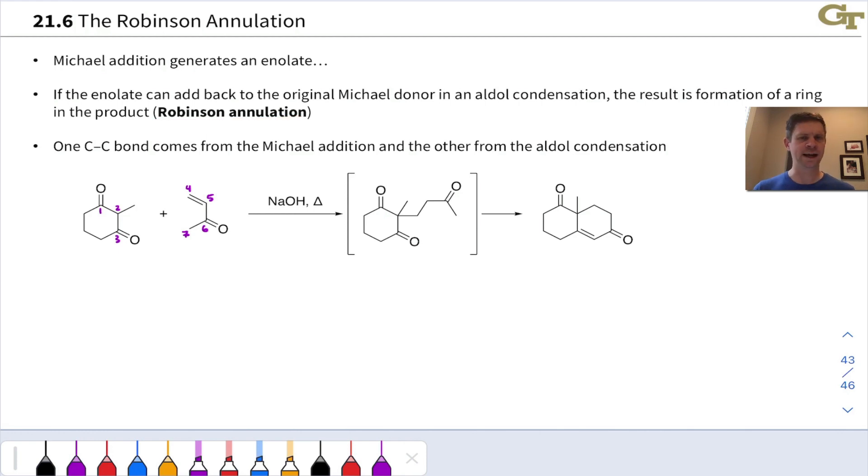Before we dig into the mechanism, I think it's helpful to break down the reactants and products and see where the atoms of the reactants end up in the products. So I've gone ahead and numbered the atoms of the reactants. Here's our Michael donor. Notice we've got two carbonyls in a 1,3-dicarbonyl pattern. Carbon two is going to be our nucleophile.